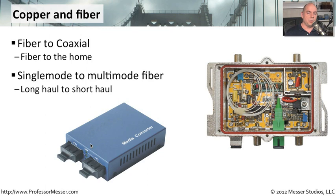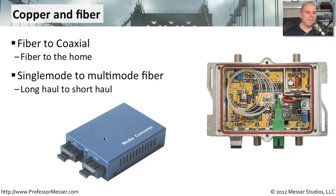We may also need to convert between fiber types — single-mode to multi-mode or multi-mode to single-mode. To do that, we can use a single media converter with two fiber connections that converts between those two types. One nice thing about fiber-to-fiber conversion is that you don't have the power requirements you have with copper. Inside the converter, we're simply converting the light using mirrors and prisms, with no high-power requirement — so these usually have no power connection, which is one less thing to worry about when troubleshooting.